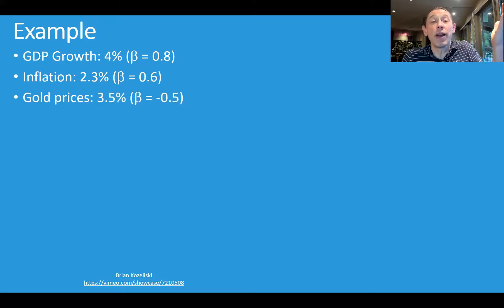We think gold prices are going to go up by 3.5%, and our asset has a negative 0.5 beta exposure to gold prices, and we have the S&P 500. We think that's going to go up 7%, and our particular asset has a beta of 1.4 versus that asset.